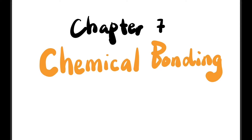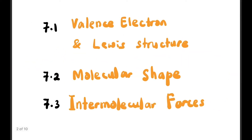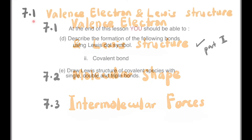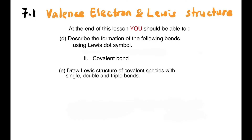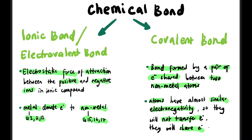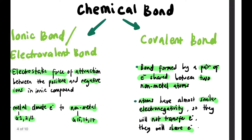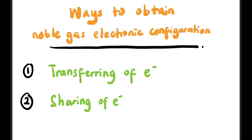Hi guys, welcome back to the channel. Still in Chapter 7 Chemical Bonding, and this is 7.1 Valence Electrons and Lewis Structure Part 2. In this particular video we're going to focus on the formation of covalent bonds using Lewis dot symbols, and also draw the Lewis structure of covalent species with single, double, and triple bonds. As a recap, covalent bond is formed by sharing of electrons between non-metals.